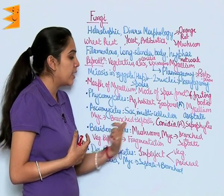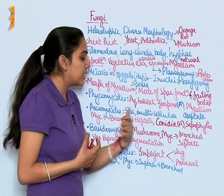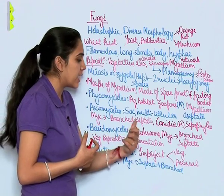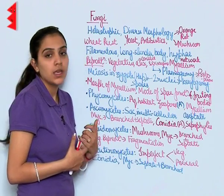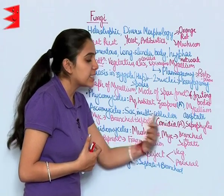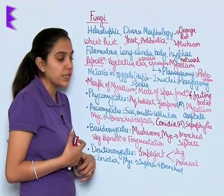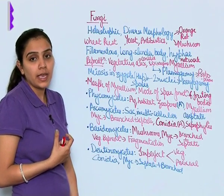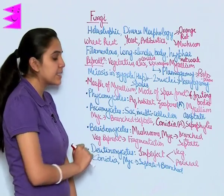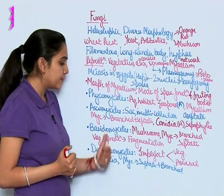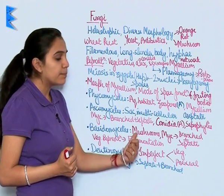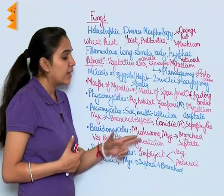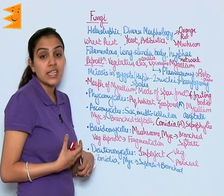Ascomycetes are also known as sac fungi. They are multicellular; their mycelium is branched and septate. They reproduce asexually by conidia formation and they are saprophytic in nature.